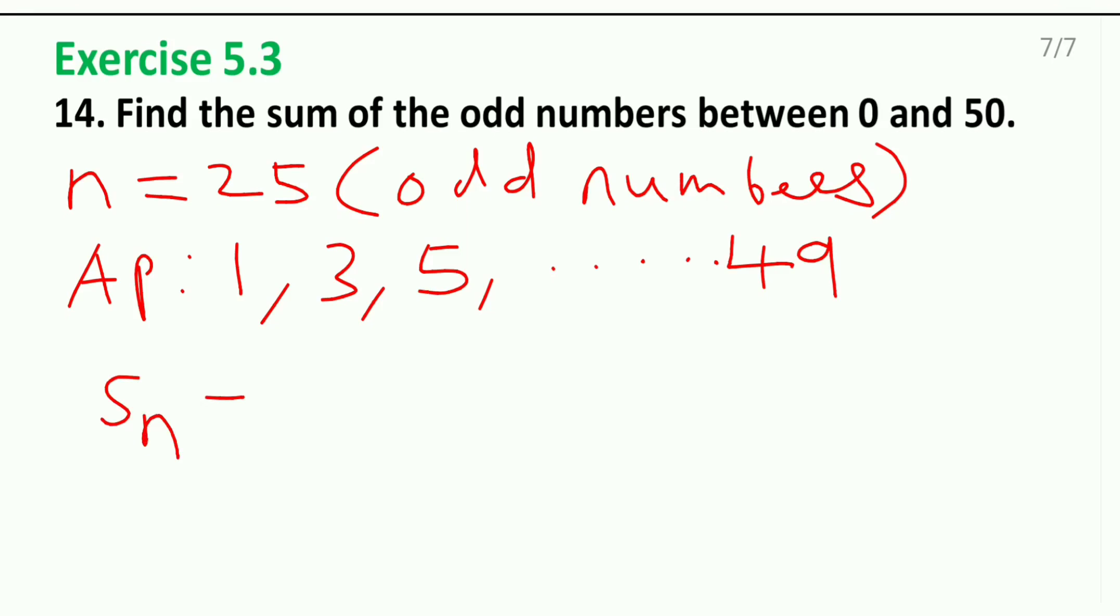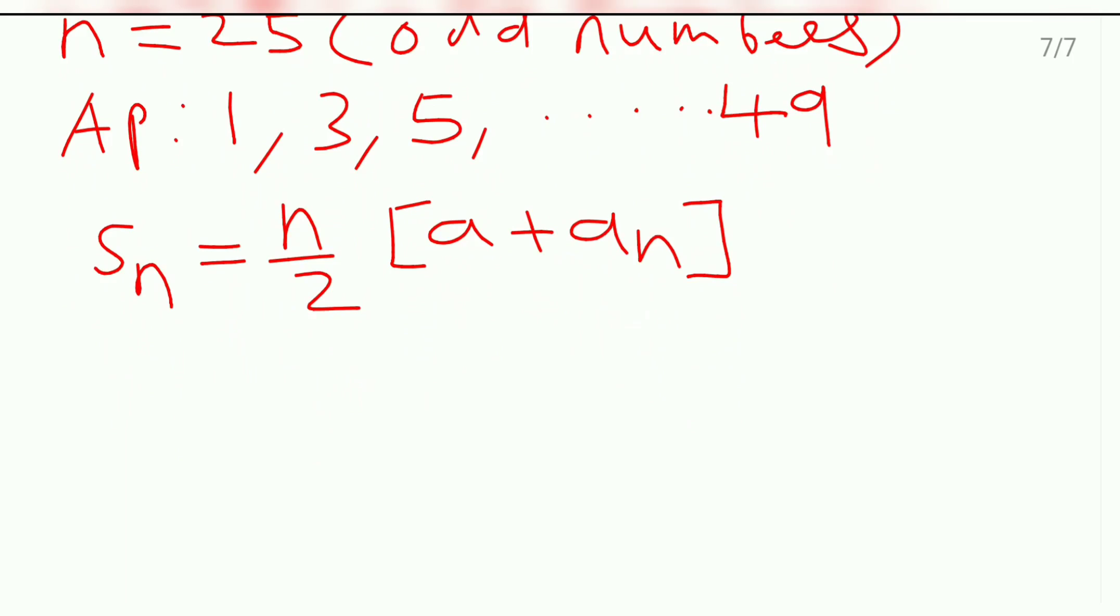I will write down sum of n terms formula as n by 2 in the bracket, first term and the last term. Easily I'll get the answer here. Sum of 25 numbers which is equal to 25 by 2 in the bracket, first term and last term is 49.